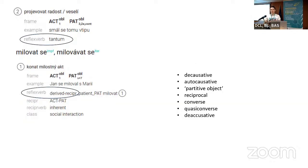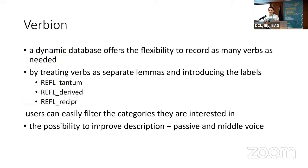In Czech ValLex, all reflexive verbs carry the attribute 'reflex verb'. Reflexiva tantum have the value 'tantum', while other reflexives have the value 'derived', and they are further classified into seven categories based on syntactic operations. In our database, since it is a dynamic database offering flexibility to record as many verbs as we want, we decided to treat reflexive verbs as separate lemmas and to introduce the labels 'tantum', 'derived', and 'reciprocal' — the same as in ValLex. This way users can easily filter the categories they are interested in, and it opens the possibility to improve the description in the future, for example to include passive, middle voice, and syntactic operations.